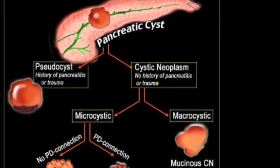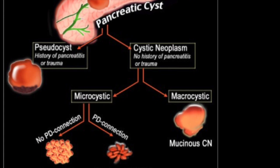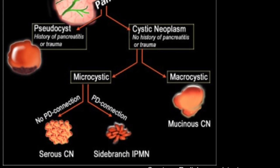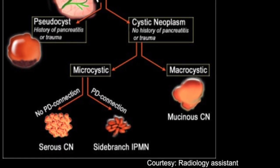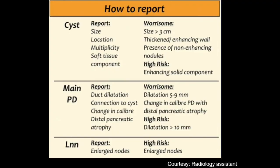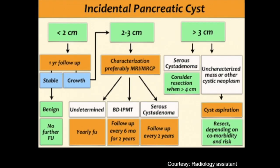We can differentiate the various pancreatic cystic lesions using history, imaging appearance, and whether the lesion communicates with the pancreatic duct or not. When reporting, we must mention all details about the cyst: size, location, multiplicity, and soft tissue component — because enhancing soft tissue with dilated pancreatic duct are worrisome features suggesting malignant nature. This algorithm helps guide follow-up or further management, as small lesions can be safely followed while larger lesions more than 3 cm may require surgical excision.